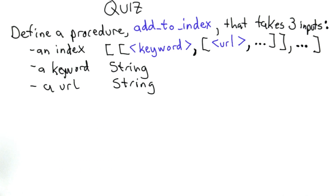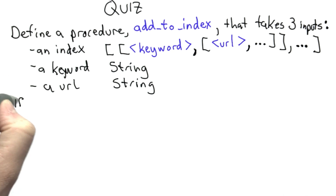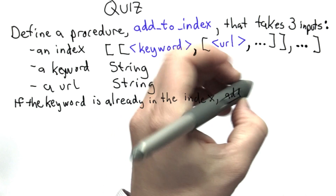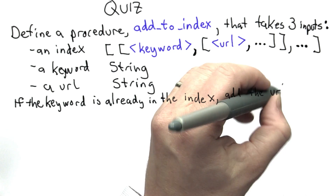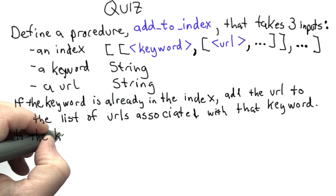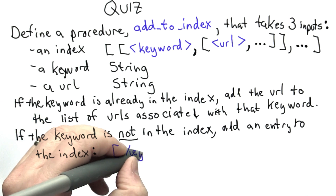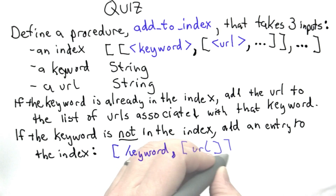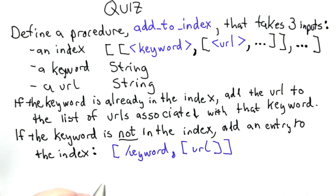What addToIndex should do depends on whether or not the keyword passed in is already in the index. If the keyword is in the index, we don't want to create a new entry — we only want that keyword to appear once. Instead, we add the URL to the list of URLs associated with that keyword. If the keyword is not in the index, we add a new entry: a list containing the keyword and the list of URLs where that keyword appears.